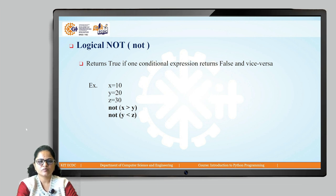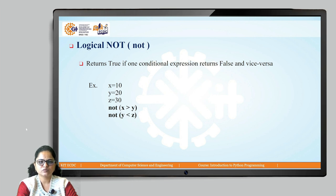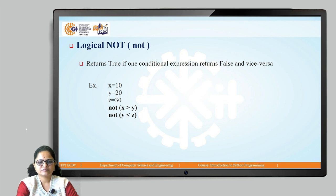The last logical operator is logical NOT. Logical NOT returns true if the conditional expression returns false, and returns false if the conditional expression returns true. For example, NOT x greater than y: 10 greater than 20 is a false statement, so NOT of false is true. Therefore NOT x greater than y returns true. And NOT y less than z: 20 is less than 30, which is a true statement.